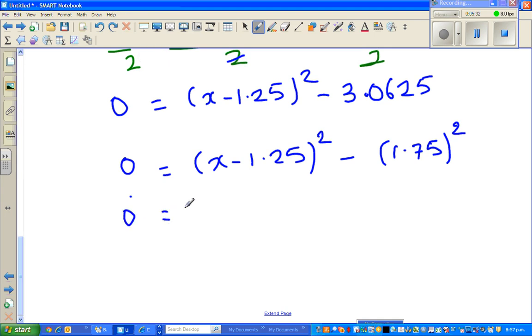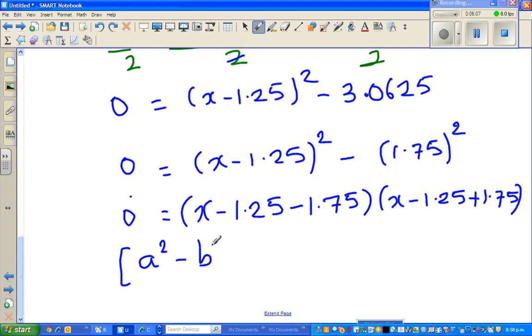So 0 is equal to, now I can use the difference of two square formula, that is a minus, this is a and this is b. Let me write that in the bracket. A squared minus b squared is equal to a minus b times a plus b. This is the formula. This is a wonderful formula, very useful.